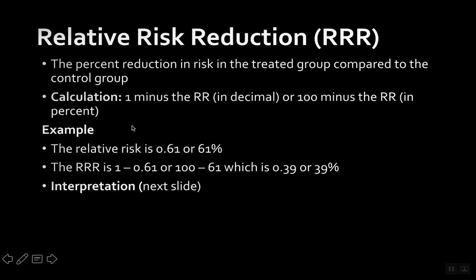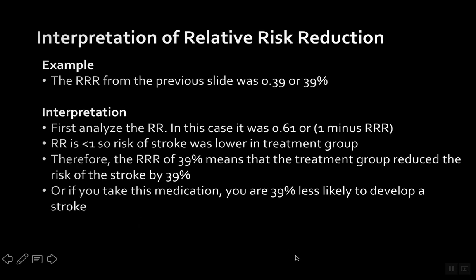Once you get the relative risk, you subtract: 1 minus that value, or 100 minus that value, giving 39% or 0.39. The relative risk is 0.61, which is less than 1, so the risk of a stroke is lower in the treatment group. Therefore, the relative risk reduction of 39% means the treatment group reduced the risk of stroke by 39%.